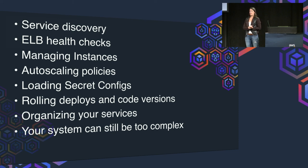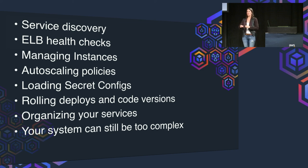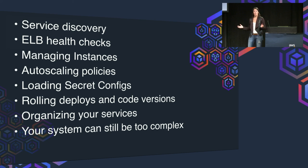Finally, organizing your services and system can still be too complex — but those are human problems. You can have 1,000 microservices and it's going to be hard to know where they are, what they're doing, and who manages them. You could have what Kelsey Hightower — a developer evangelist for Kubernetes — calls a 'distributed monolith.' You had one monolithic codebase, broke it into services, but those services are actually tightly coupled and still all talking to the same database. If one service fails, many services will fail because they're not truly decoupled — and that will still be true even if you use containers and ECS.